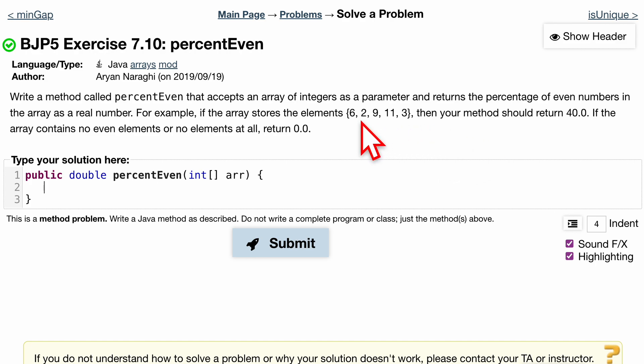What we're going to want to do is take the number of evens that we have and divide it by the length. It's just that simple.